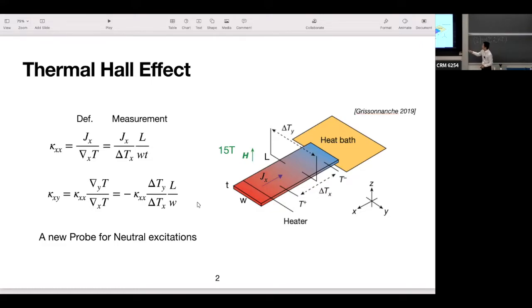In this device, of course, heat is only allowed to flow in the x-direction, and not allowed to flow in the y-direction, so j_y should be zero, and that naturally gives you a relation between kappa_xy and xx. So that's the thermal Hall effect.